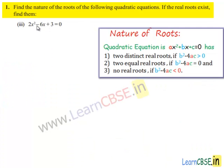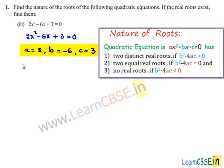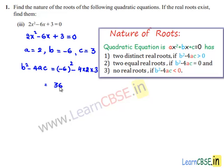Now coming to the third problem, the given equation is 2x² minus 6x plus 3 is equal to 0. Comparing with the standard equation ax² plus bx plus c is equal to 0, we get a is equal to 2, b is equal to minus 6, and c is equal to 3. The discriminant b² minus 4ac is equal to (minus 6)² minus 4 times 2 times 3, which is 36 minus 24.